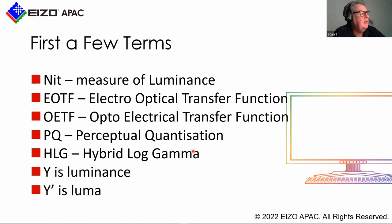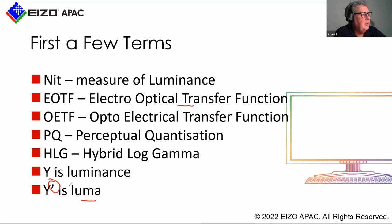We're going to be concentrating on PQ today. In components like YCbCr, the Y is luminance and you'll often see Y-prime, which is luma — meaning a transfer function has been applied to it. Luminance is linear light and Y-prime is luma. If you see Y double-prime, that generally means an HDR transfer function has been applied.